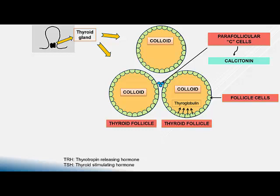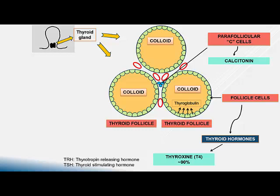The thyroid has a rich vascular supply, so there are multiple blood vessels in between the thyroid follicles. There are two types of thyroid hormones produced by the thyroid gland. First, thyroxine, also called tetraiodothyronine or T4, which contains 4 iodine molecules. Second, triiodothyronine, also called T3, which contains 3 iodine molecules.